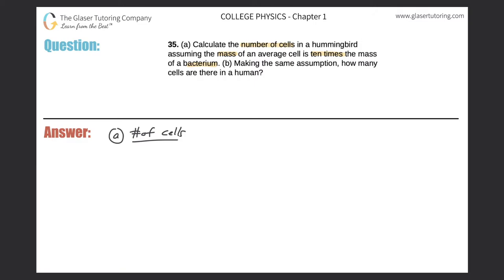So I need to know the average mass of a bacterium. If you look back in the text, it should give that value to you. The average mass of a bacterium is about 10 raised to the negative 15 kilograms. That's the mass of a bacterium.